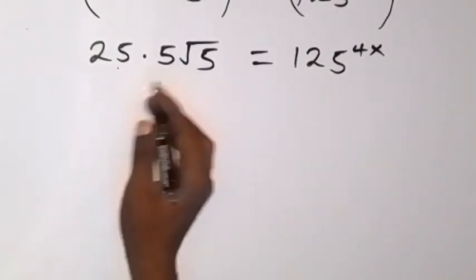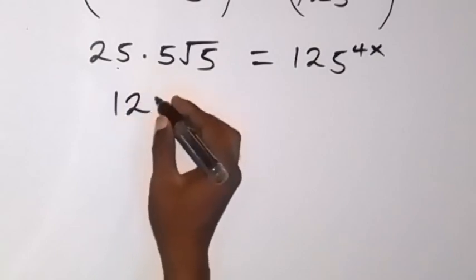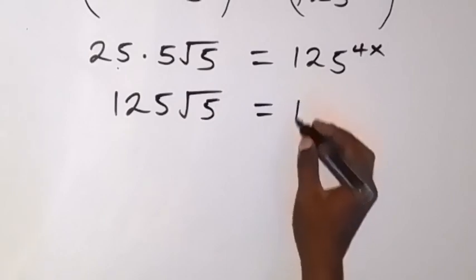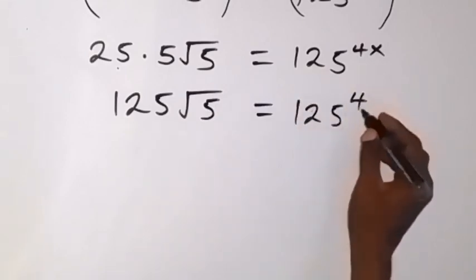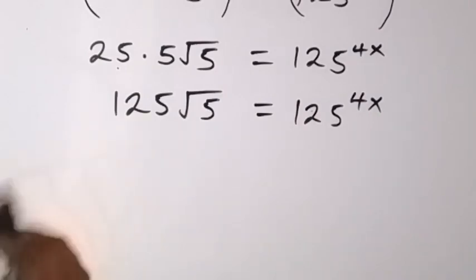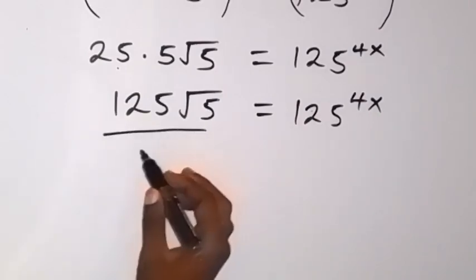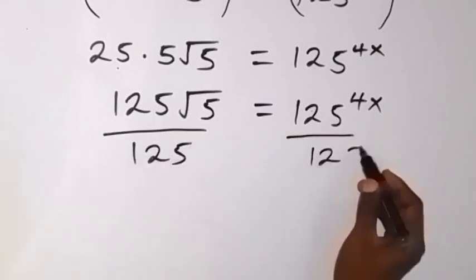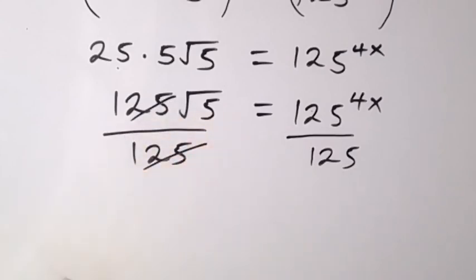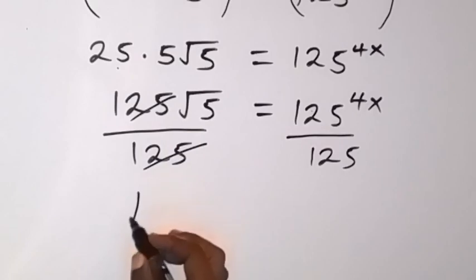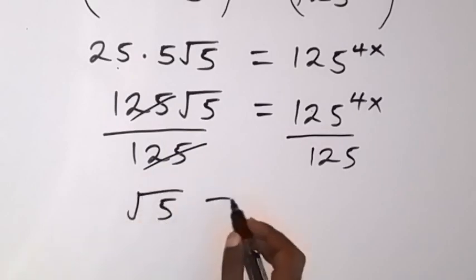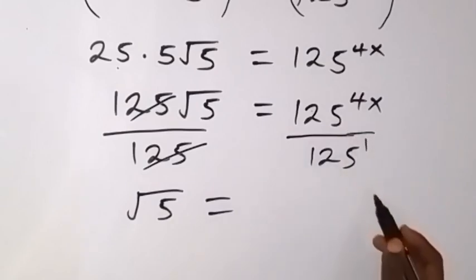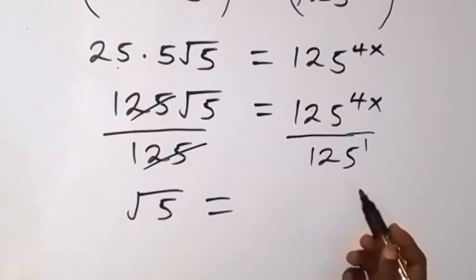From here, 25 times 5 gives us 125, so we have 125 root 5 equals 125 raised to power 4x. Now let's divide both sides by 125. After dividing, we have root 5 left on the left side, and on the right side we have something like 125 raised to power 1, with the same base of 125.